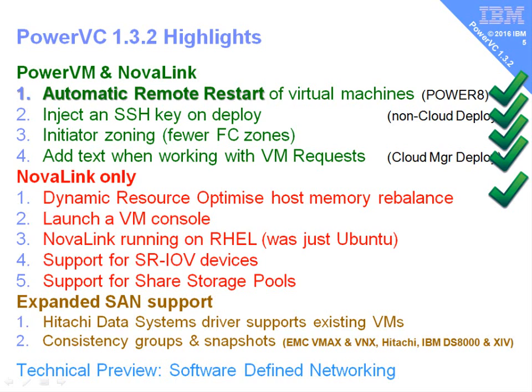Number three is initiator zoning — a different way of doing zoning that reduces the number of zones we have to create. Some customers are actually running out of zones in their switches. Number four is the ability to add text to a VM request, where a self-service user wanting a new virtual machine can explain why to the admin user, and the admin can explain their decision back to the self-service user.